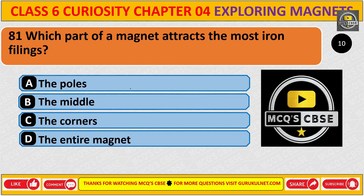Which part of a magnet attracts the most iron filings? The correct answer is A. The poles.